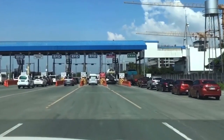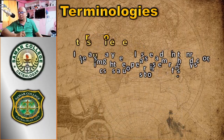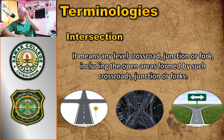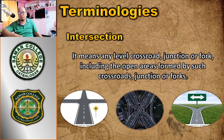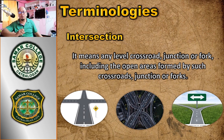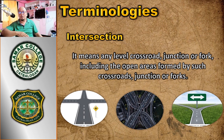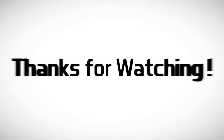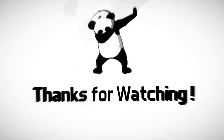An intersection means any level crossroads, junctions, or forks, including the open areas formed by such crossroads. In simpler terms, an intersection is an area of a roadway created when two or more roadways join together at any angle. The three types visible in diagrams are: crossroads, junction, and fork.